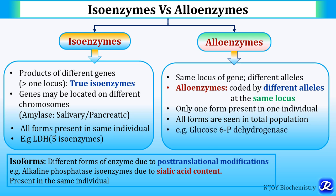For example, the enzyme glucose-6-phosphate dehydrogenase has alloenzymes. This enzyme is very important in one of the metabolic pathways of carbohydrate metabolism. This is the enzyme of the HMP pathway — it is the regulatory enzyme of the hexose monophosphate shunt. So glucose-6-phosphate dehydrogenase has different alloenzymes.